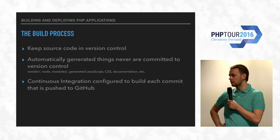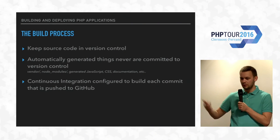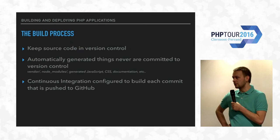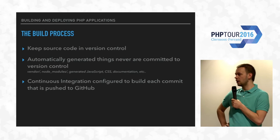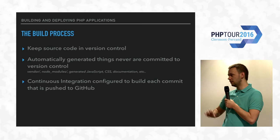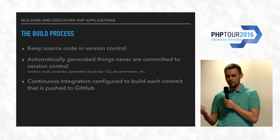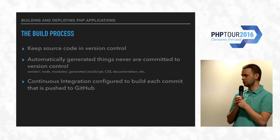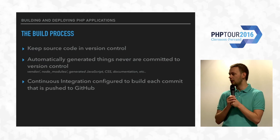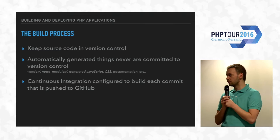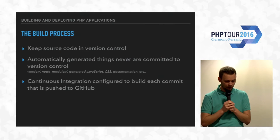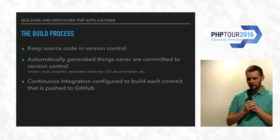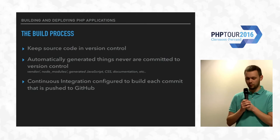The last assumption about this build process is that we have our continuous integration configured so that each commit pushed to GitHub actually gets built. You can use different tools for this, which we'll talk about a bit later. The key thing is you build everything — every branch, every commit that gets pushed.